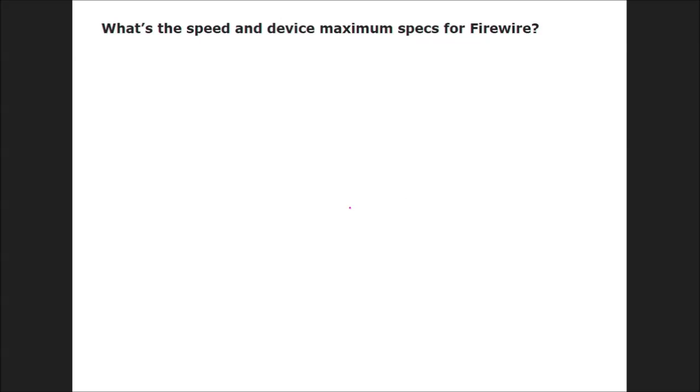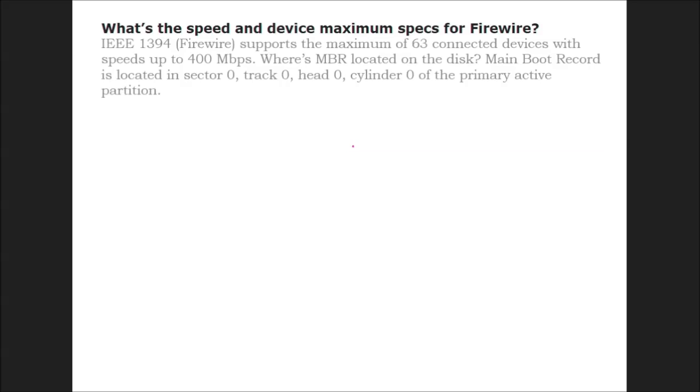What's the speed and device maximum specs for Firewire? IEEE 1394 (Firewire) supports a maximum of 63 connected devices with speeds up to 400 to 800 Mbps. There are various versions: 1394, 1394A, 1394B. 1394B gives speed up to 800 Mbps.